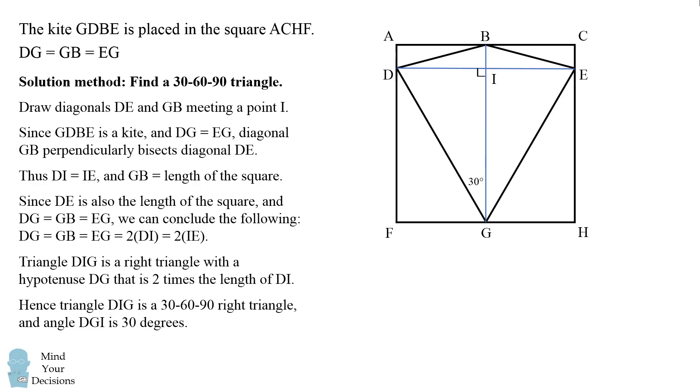Therefore, angle DGI is equal to 30 degrees. By similar reasoning, EIG is a 30-60-90 right triangle, and so angle EGI is equal to 30 degrees.